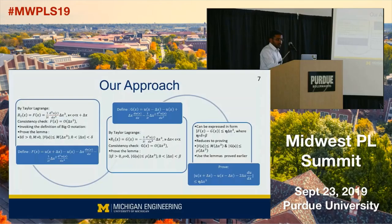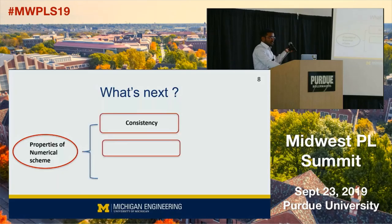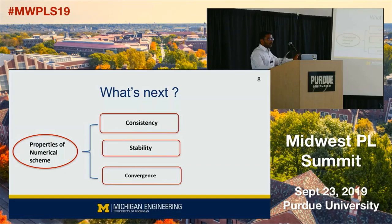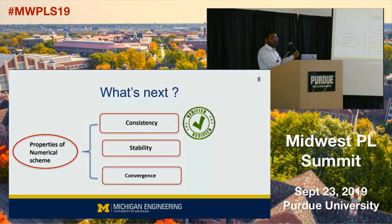We have verified the consistency property. Now, having verified consistency, the question is what's next? A numerical scheme has three basic properties: consistency, stability, and convergence. Stability says that if you are carrying out a numerical computation, the error at each iteration remains bounded so that your solution does not explode. Convergence — the holy grail of this entire analysis — says that as the discretization step goes to zero, the difference between the true solution and the approximate solution goes to zero. We have verified consistency and are currently working on proving the stability and convergence properties of the scheme.